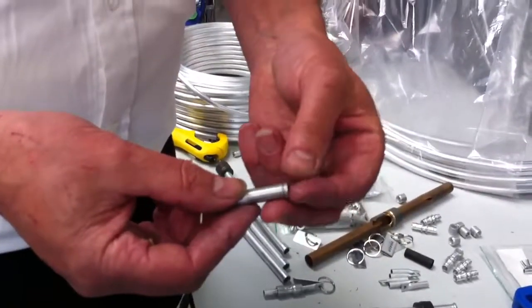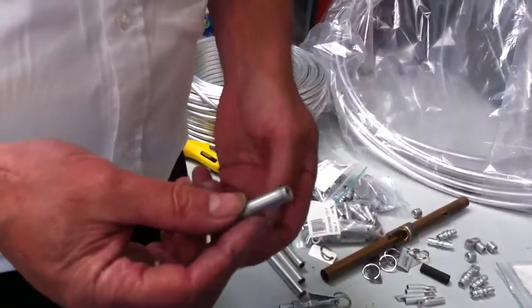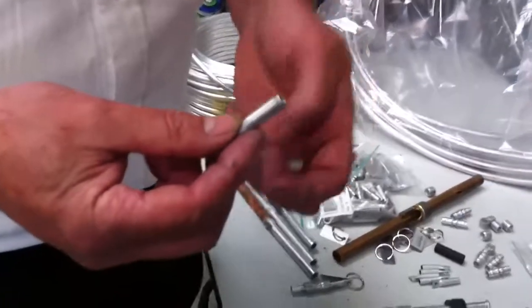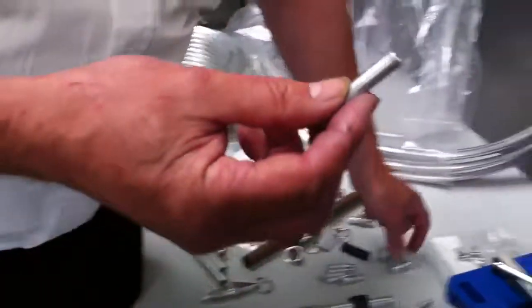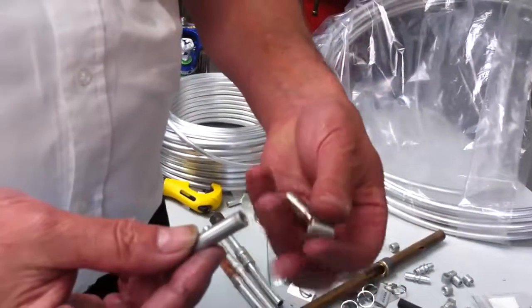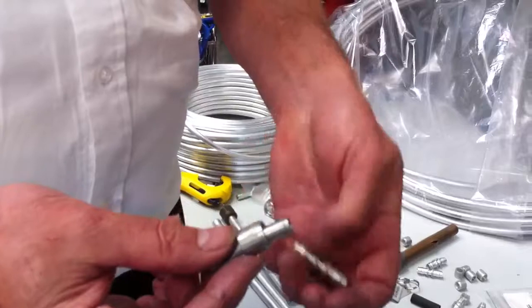We use a stabilisation insert inside the tube. That has to be the right size for the wall thickness of the tube. We then take the connector and slide a collar onto the tube.